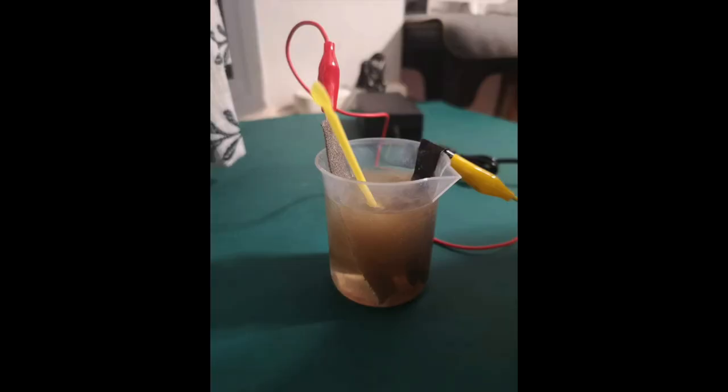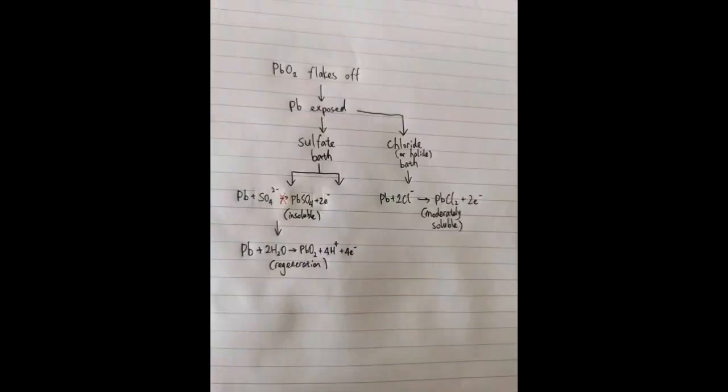I tested this again using a smaller cell, and it showed the exact same result. Here is the supposed mechanism. So my lead anode keeps flaking off lead dioxide and exposing fresh lead metal. In sulfate-based baths, the lead metal does not move in solution since lead sulfate is insoluble. Therefore, it quickly oxidizes to lead dioxide on the surface again. But in chloride-based baths, lead moves into solution as lead chloride, and this gradually consumes the lead metal.